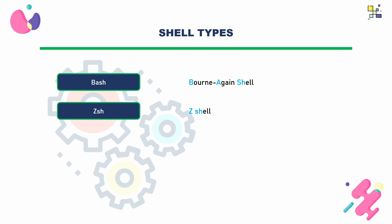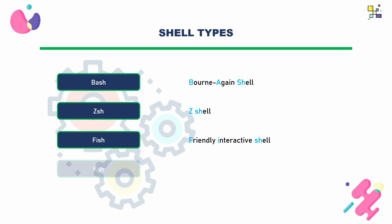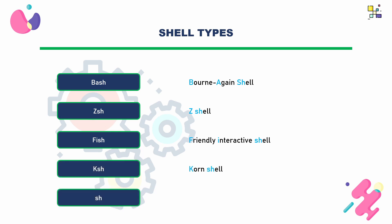We have some other shells like fish, which stands for Friendly Interactive Shell, as well as ksh (KornShell) and sh (Bourne Shell). The choice of which shell to use depends on personal preferences, scripting needs, and system requirements. Users can typically change their default shell and even switch between different shells on the same system if multiple shells are installed.